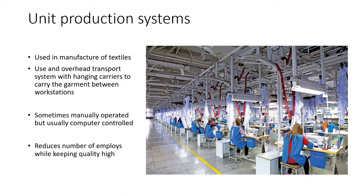Unit production systems are mainly used in textiles. Workers stay at their station with their machine, and garments or textile clothing come to them from overhead rails. The idea is that you don't need someone to get up and run to fetch equipment — you don't need a separate person going between workers to distribute equipment. This speeds up the whole process while maintaining good quality because people stay focused on what they need to do.